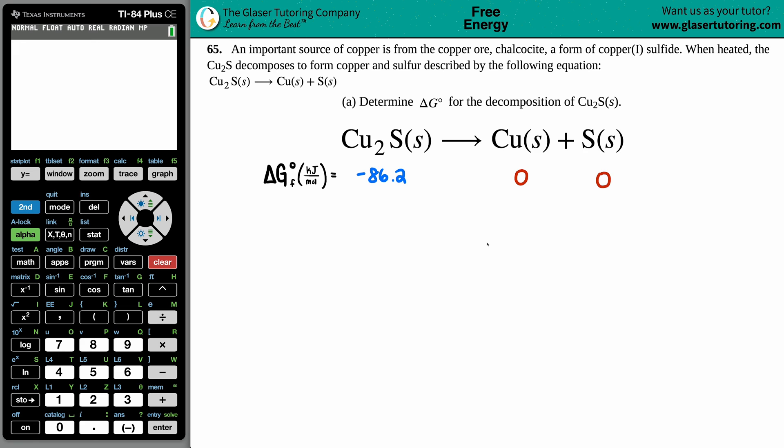Number 65. An important source of copper is from the copper ore chalcocite, which is a form of copper(I) sulfide. When heated, the Cu₂S decomposes to form copper and sulfur, described by the following equation: Cu₂S(s) yields Cu(s) plus S(s), which I also put over here. Now for letter (a).